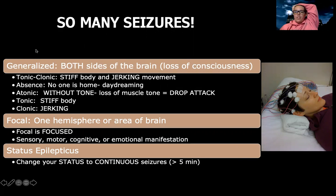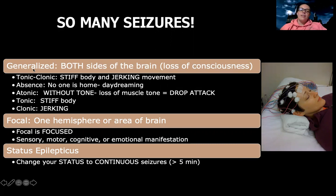There's what are called generalized seizures. When we're talking about generalized seizures, this is a seizure that's happening on both sides of the brain, and usually it's marked by the fact that there is loss of consciousness.